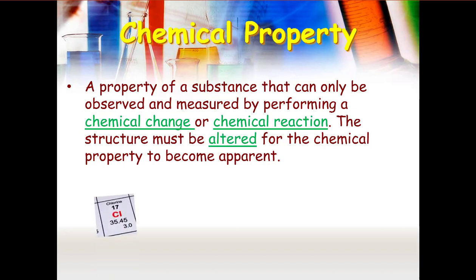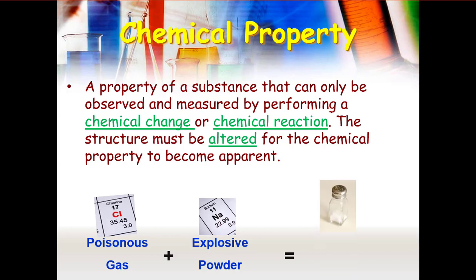So if we take chlorine, remember chlorine from a few slides back. Chlorine is a poisonous gas. If we combine chlorine, poisonous gas, and sodium, which is an explosive powder. Poisonous gas, explosive powder. We get what? We get table salt. So what's happening is there's a chemical change that happens when these two guys combine. Chemically, it changes the nature. It changes the properties of these two separate items, and they become something else completely.